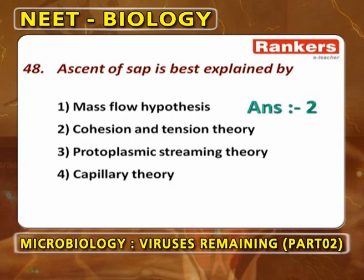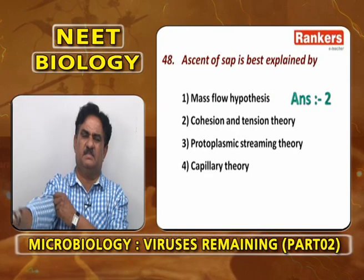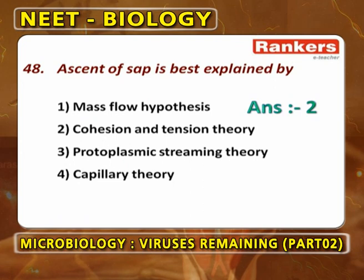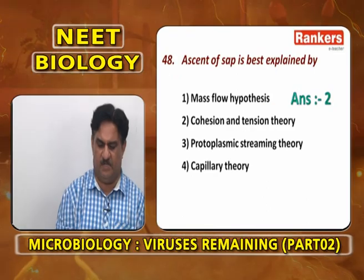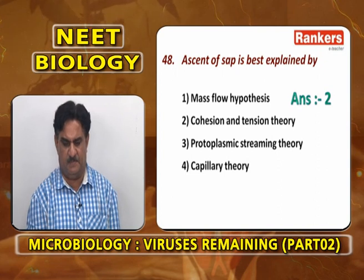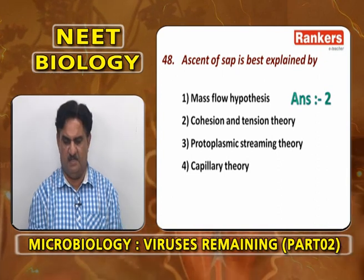Ascent of sap is best explained by cohesion tension theory. Mass flow hypothesis is for movement of food from leaves to various parts. Protoplasmic streaming hypothesis also explains phloem-based transportation of food. The best answer for ascent of sap is the cohesion tension theory.